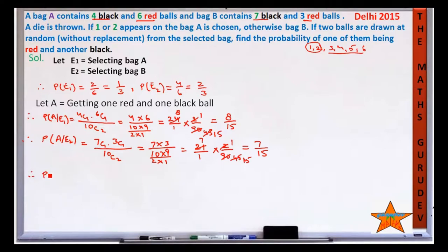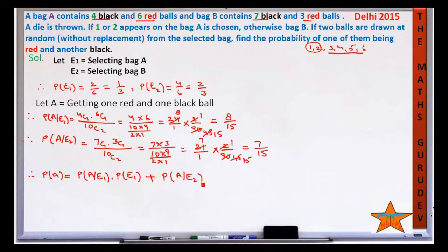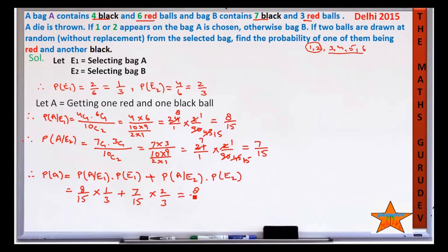Now we apply the total probability formula: P(A) = P(A|E1)×P(E1) + P(A|E2)×P(E2). Substituting values: P(A) = (8/15)×(1/3) + (7/15)×(2/3) = 8/45 + 14/45 = 22/45. Therefore the probability of drawing one red and one black ball is 22/45.